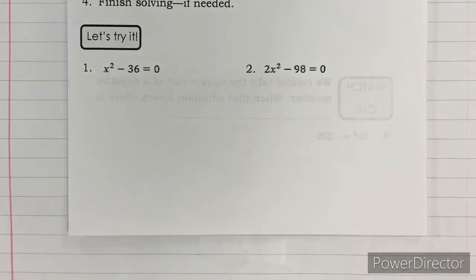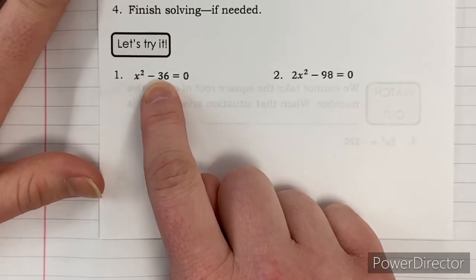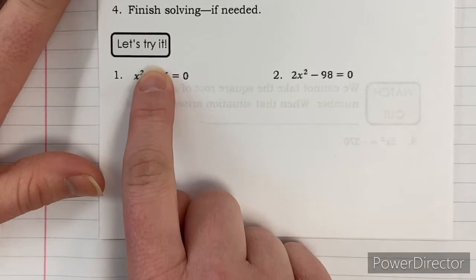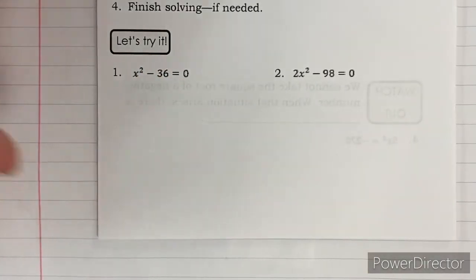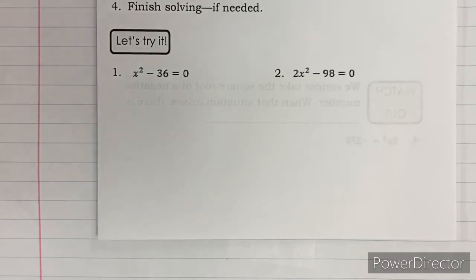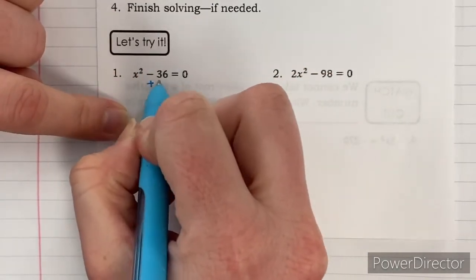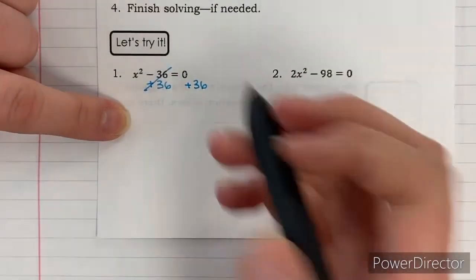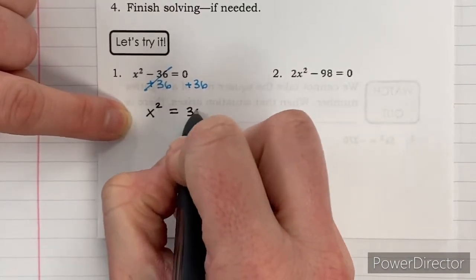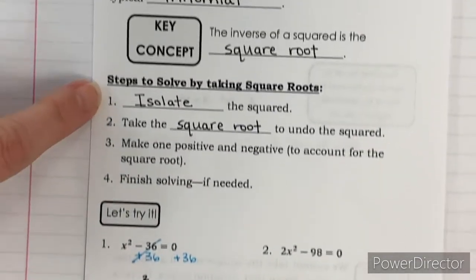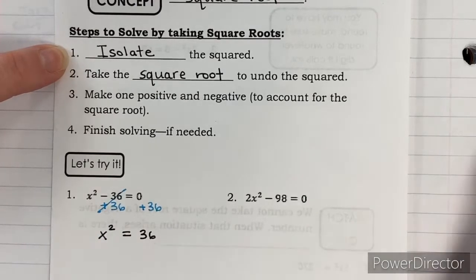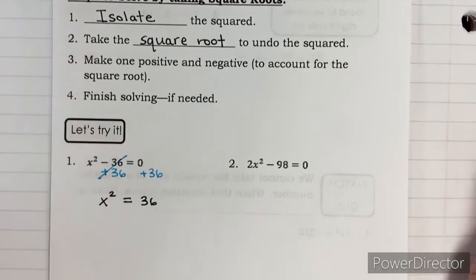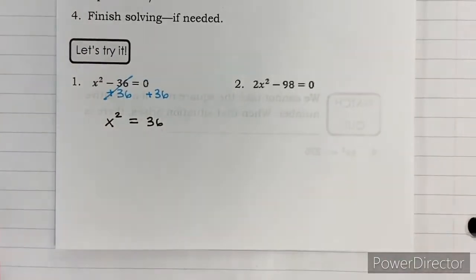Let's start with number one. The first thing we need to do is isolate the squared. We have x squared minus 36 equals zero. I need to get rid of that minus 36 using the inverse operation, so we add 36 to both sides. Those cancel to zero, and we're left with x squared equals 36. We've done step one — x squared is by itself. Next, take the square root of each side to get x by itself.